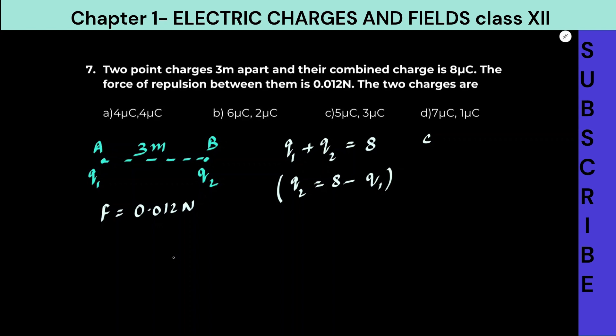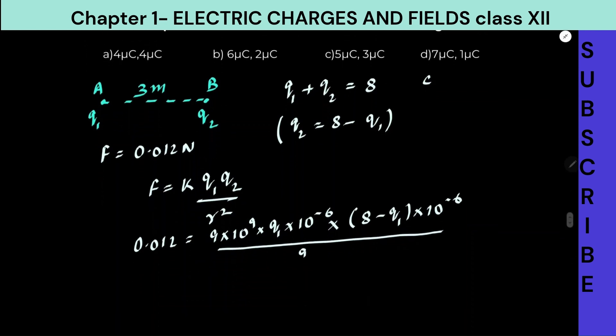Let us substitute here. Force equals K Q1 Q2 upon R square. Force here is given 0.012. K here is 9 into 10 to the power 9. Now be very careful, Q1 individually is in microcoulombs. So Q1 into 10 to the power minus 6 into Q2, that will be 8 minus Q1 whole into 10 to the power minus 6. Q2 is in microcoulombs. So be very careful with that. R is how much? The separation is 3 meters, which is 9.